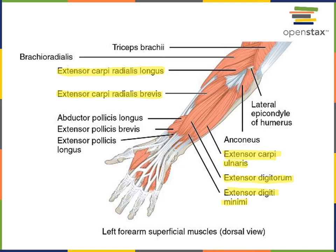A few other muscles visible in this illustration include abductor pollicis longus, which performs the action of abduction of the pollux — abduction of the first digit, the thumb. Extensor pollicis longus performs extension of the pollux. In this illustration, all we can see is the tendon from extensor pollicis longus, because the belly of the muscle is located deep to extensor digitorum.